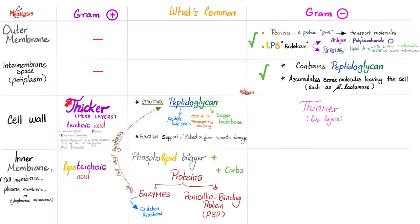The cell wall is thicker in gram-positive with more peptidoglycan layers, and thinner in gram-negative with fewer peptidoglycan layers. In gram-positive, there is teichoic acid in the cell wall; you do not find teichoic acid in gram-negative. Teichoic acid is species-specific — the teichoic acid of Staphylococcus aureus is different from that of another gram-positive bacteria. It's also a polymer containing phosphate, is covalently bound to the peptidoglycan, and binds fibronectin.